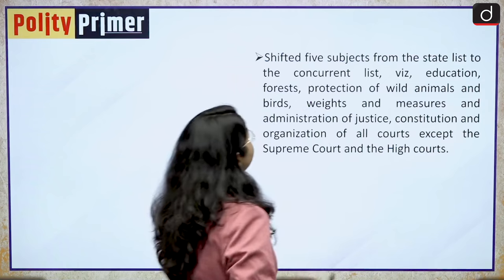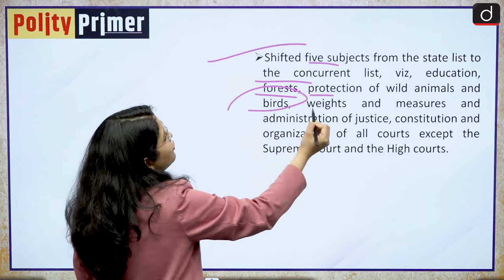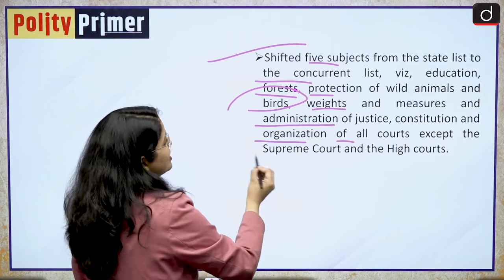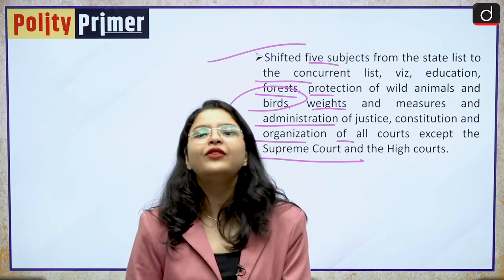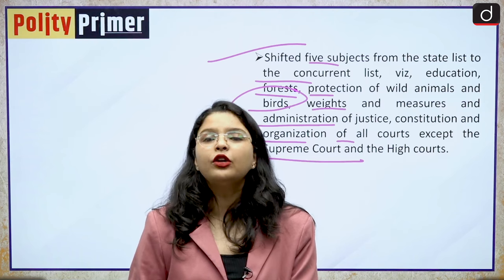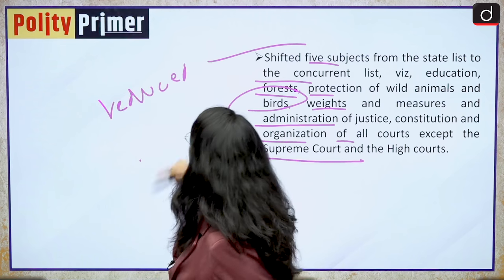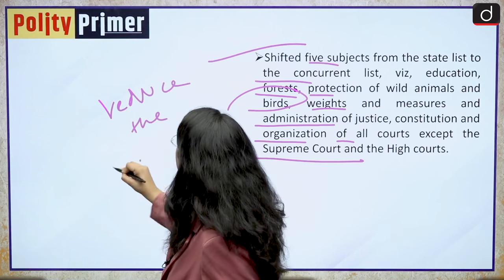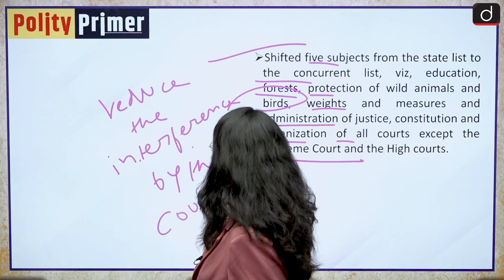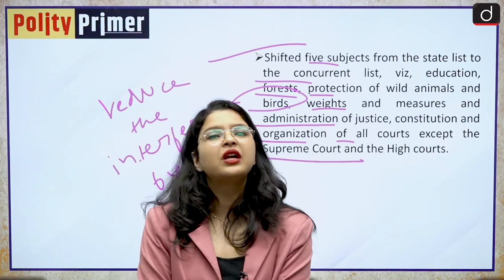The amendment shifted five subjects from the state list to the concurrent list: education, forests, protection of wild animals and birds, weights and measures, and administration of justice, constitution and organization of all courts except the Supreme Court and the High Courts. This was very evident because of the ongoing tussle between the Parliament of India and the courts — parliament wanted to reduce the interference by the courts, especially the High Court, because of the decision of the Allahabad High Court in the case of Raj Narain versus Indira Gandhi.